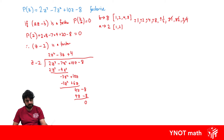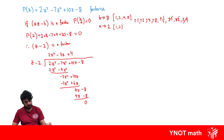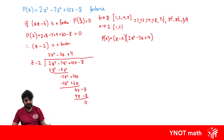Our polynomial can now be expressed as the divisor multiplied by the quotient. So p of z equals z minus 2, all multiplied by 2z squared minus 3z plus 4. We just need to factorize this quadratic term.